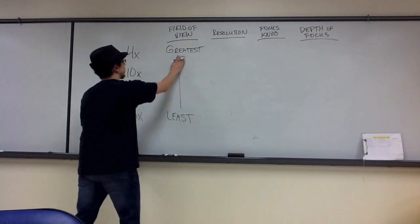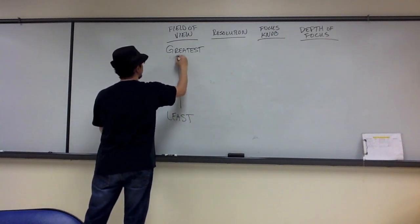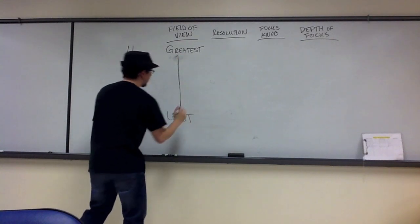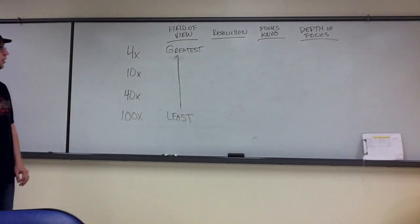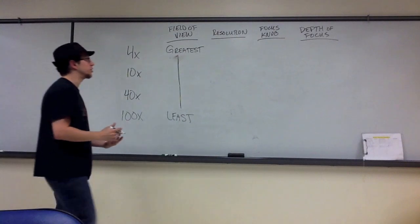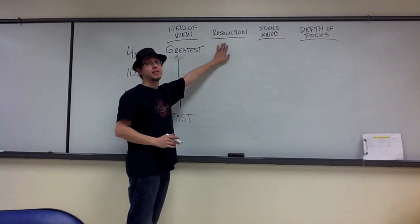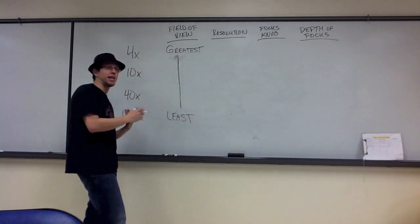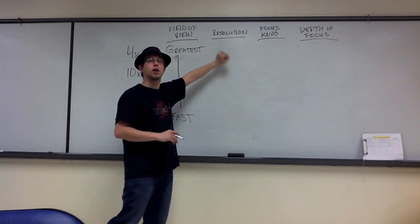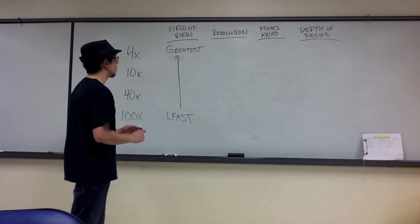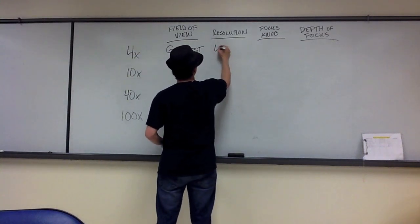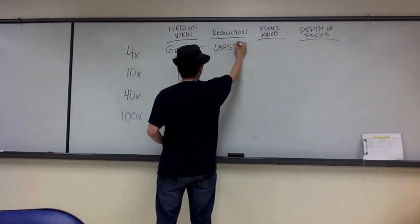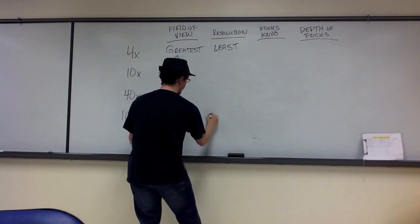From least to greatest, let's draw it like this. Resolution is the amount of detail you can see in your sample. The higher you go in magnification, the better the resolution of your particular sample. So 4x in this case is going to have the least amount of resolution, while 100x will have the greatest.